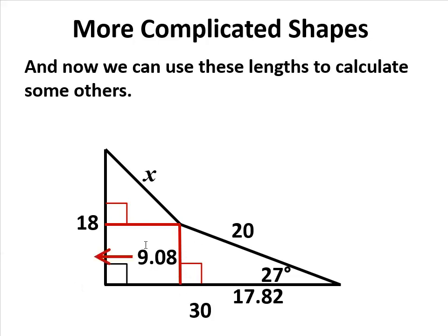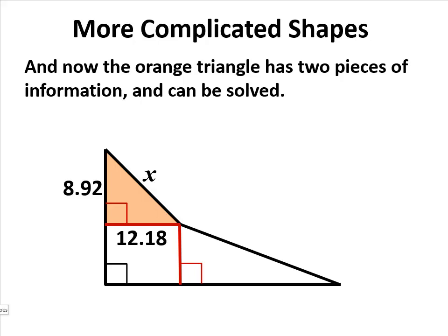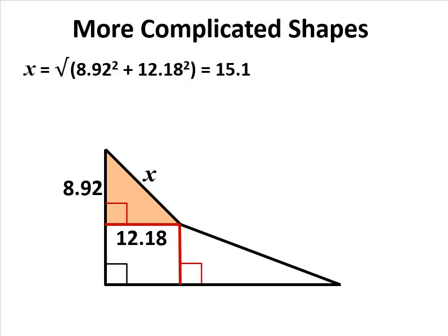Having done that, I can use my knowledge of rectangles to transfer pieces of information across. The 9.08 from this triangle becomes there, and 9.08 means that what's left over up there must be 8.92. I can also transfer this piece of information across here, which tells me that having taken away from 30, I'm left with 12.18. Then I transfer that across the rectangle to the bottom of my upper triangle. And finally I have what I need: two pieces of information for my triangle, which I can solve using Pythagoras.